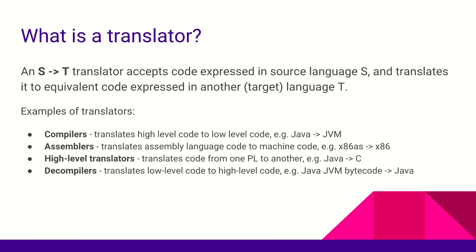High-level translators convert one programming language to another — for example, converting Java to C. Decompilers do the reverse: they decompile low-level code back into high-level source code. For example, if you have Java bytecode, a decompiler converts it back to high-level source code. Modern IDEs do this automatically — if you click on a JDK-level class like the Object class, it will automatically decompile the bytecode and show you the source code.